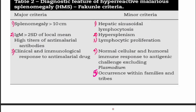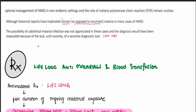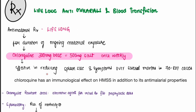Lifelong anti-malarial treatment is necessary for the duration of ongoing malaria exposure. Chloroquine 300 mg base (500 mg of salt) once weekly is given, as it is effective in reducing splenic size and symptoms over several months. Chloroquine is preferred over artemisinin-based treatments because it has immunological effects on HMS in addition to its anti-malarial properties. In areas with high chloroquine resistance, alternative agents may be used for initial treatment followed by prophylactic dosing.